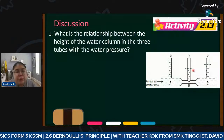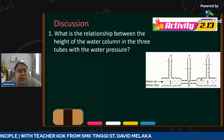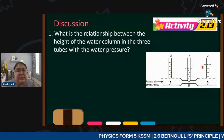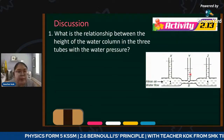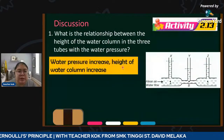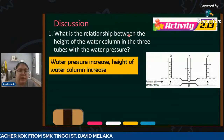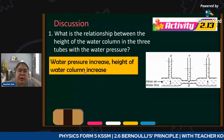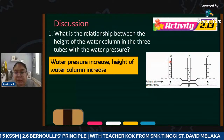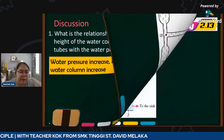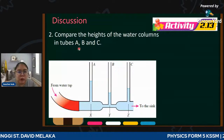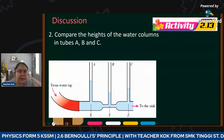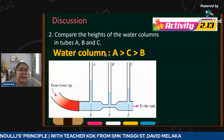Comparing A and C - since their diameters are the same, following the concept that pressure flows from high to low, A should be the highest pressure and C is the second. So the order is: A highest, C moderate, B lowest. For the question: water pressure increases when the height of water column increases. So A has the highest water column, C is second, and B is the lowest. The answer: water column A > C > B.